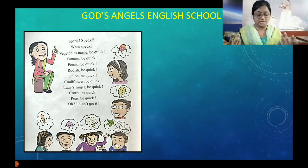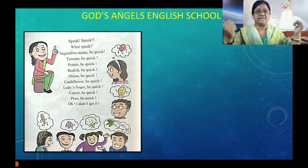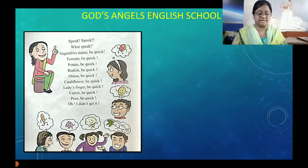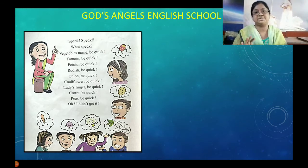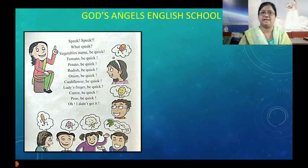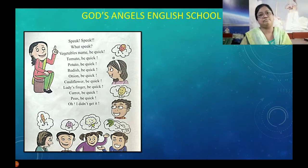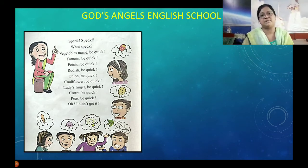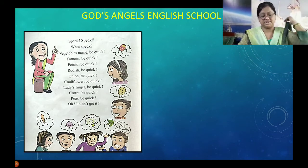I did not get it. I did not get it. Again we will do. Aap yahan kuch bhi le sakte ho — fruits ke, colors ke naam. Main abhi family members ke naam lekar poem karaun gi. Aap ko ek baar phir se poem karaun gi. Thik hai?